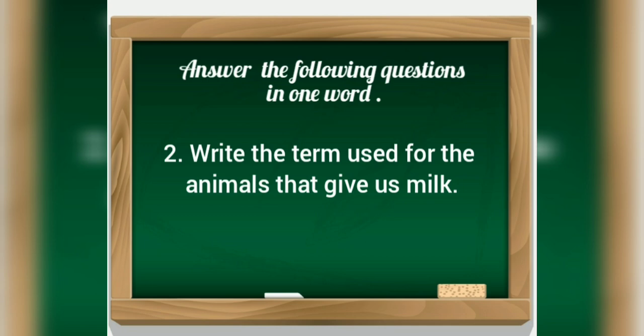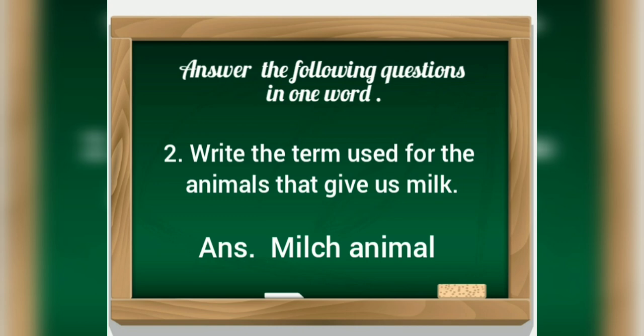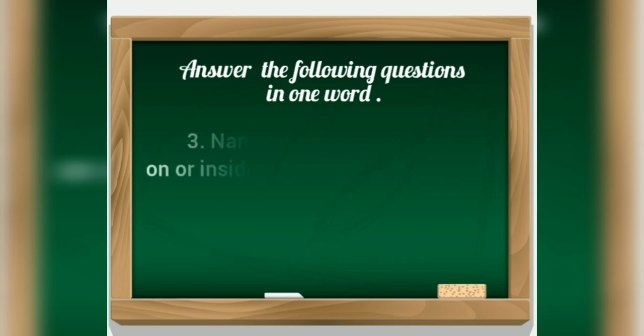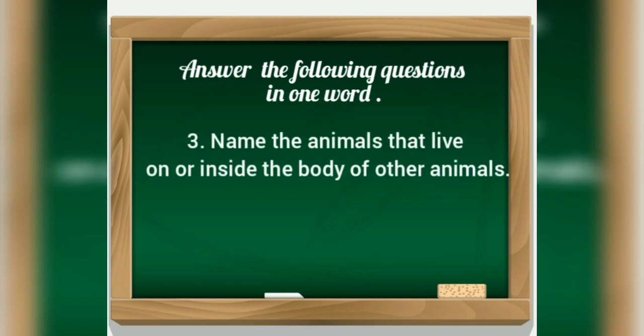16. Animals that give us milk — what are they called? Answer: Milch animals. They are called milch animals, such as cow, buffalo, goat — these are all milch animals. Third, name the animals that live on or inside the body of other animals. Answer: Parasites. They are called parasites, such as mosquito.